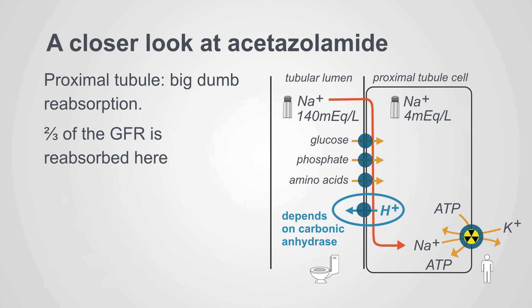If you think of the role of the proximal tubule in the kidney, think of bulk reabsorption. Two-thirds of all the glomerular filtrate is reabsorbed here. Sodium reabsorption drives the reabsorption of glucose, phosphate, and amino acids, and it also drives the secretion of hydrogen ions. That secretion of hydrogen ions is dependent on carbonic anhydrase, and that's what we're going to be focusing on with acetazolamide.